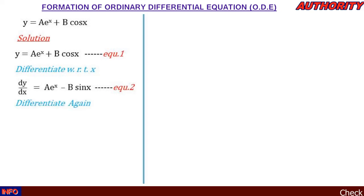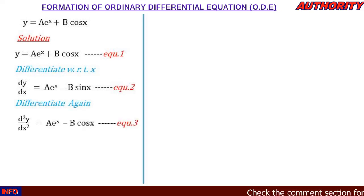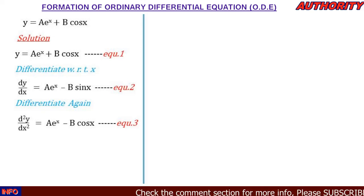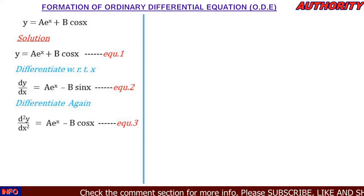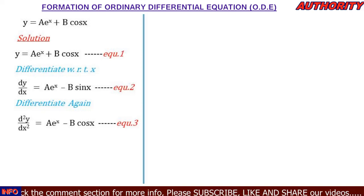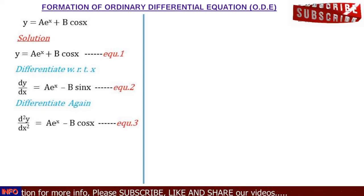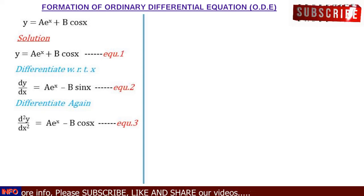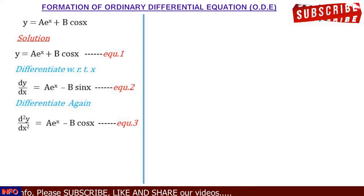We go further and differentiate again. The second derivative d²y/dx² equals: differentiating ae^x still gives ae^x, and differentiating −b·sin(x) gives −b·cos(x). Let's call this equation 3.